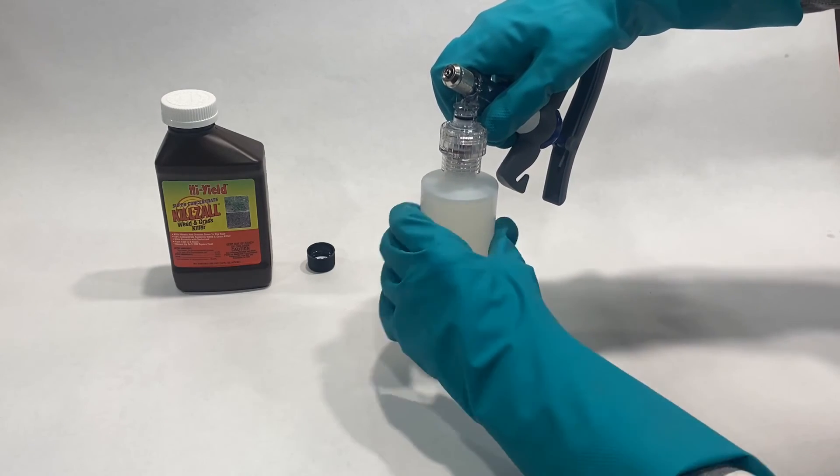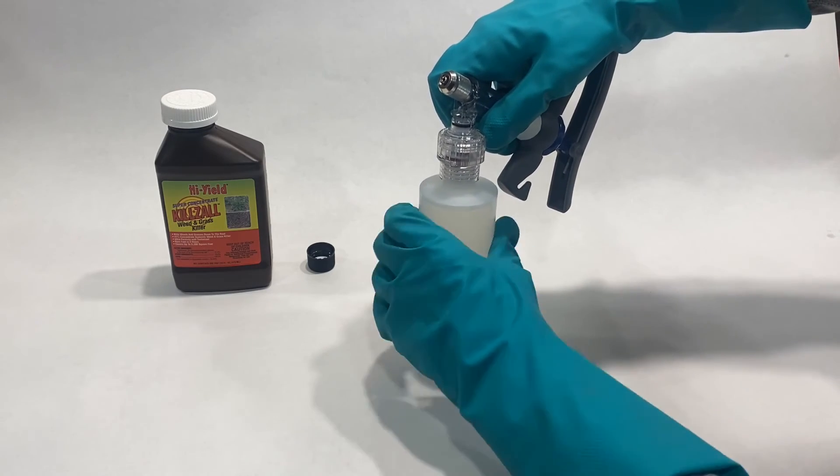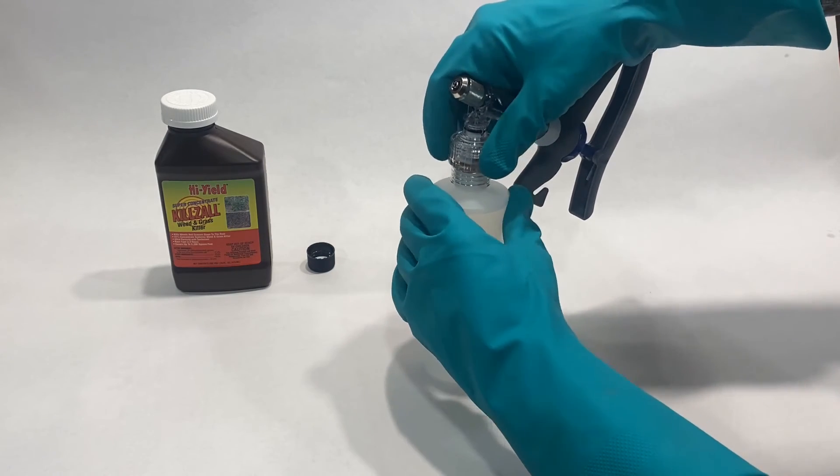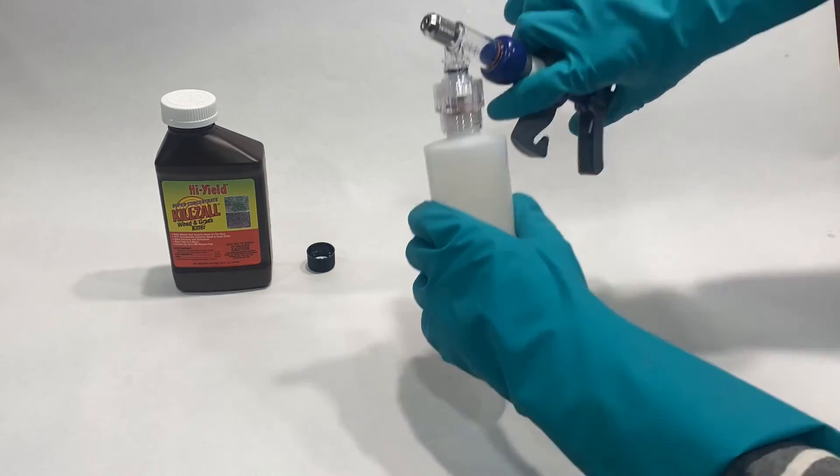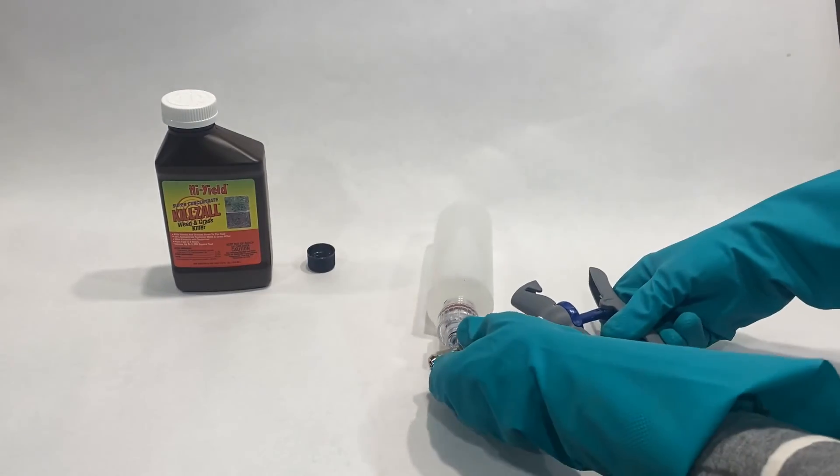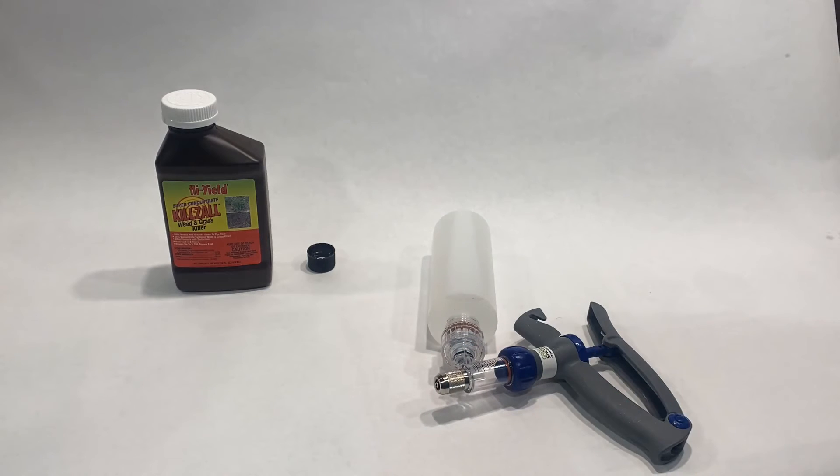Hold the bottle in place with one hand and use the other hand to hold the injector upside down. Thread the bottle onto the injector by turning the bottle as shown. Secure the bottle snugly, but don't over-tighten. Over-tightening can cause the injector to leak.